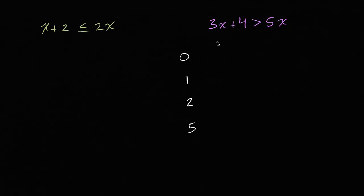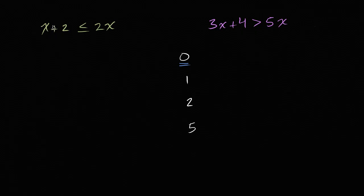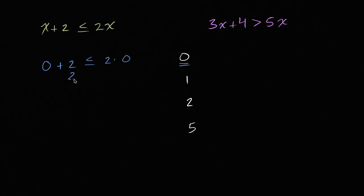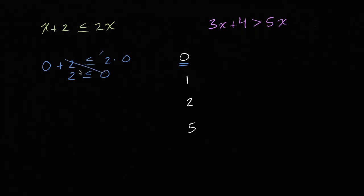So let's work through this together. If we try out zero on this inequality right over here, let's substitute x with zero. So we'll have zero plus two needs to be less than or equal to two times zero. Well, on the left-hand side this is two, and two needs to be less than or equal to zero. Is two less than or equal to zero? No, two is larger than zero. So this is not going to be true.